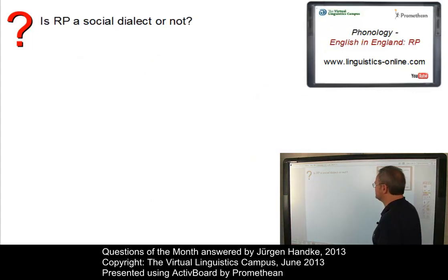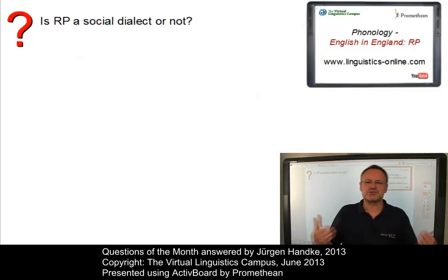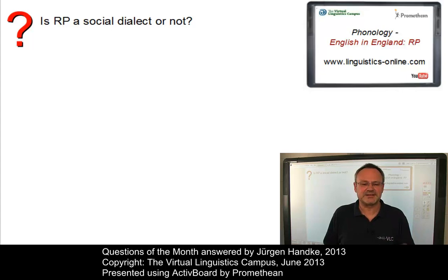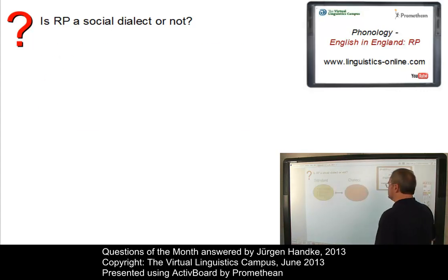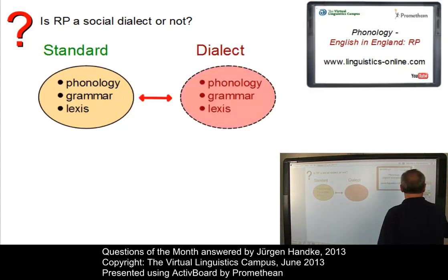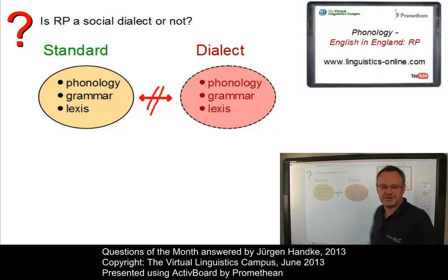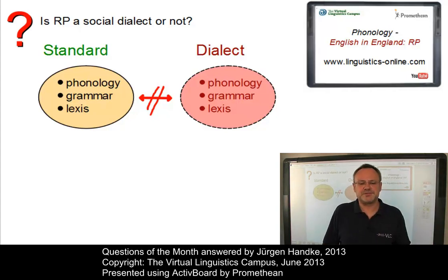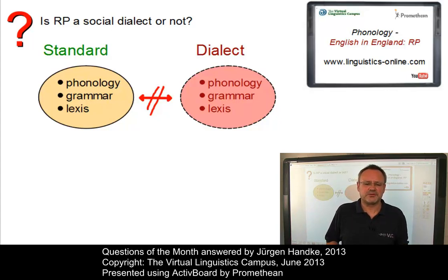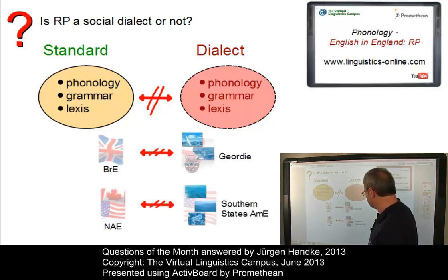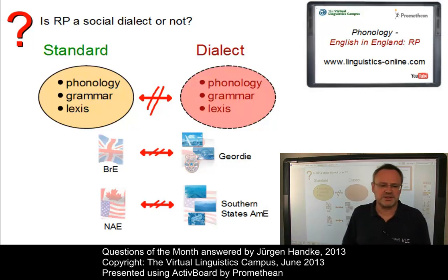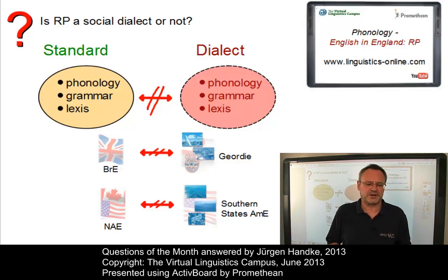The next question concerns the status of received pronunciation. Is it a social dialect or not? To answer this question let us say something about the term dialect in general. A dialect is defined as a variety of a language that differs from the standard in terms of phonology, grammar and lexis. According to this definition, Geordie, the variety spoken in the area around Newcastle in England, can be defined as a dialect of English, and the same applies to Southern States American English, which would then be a dialect of North American English.